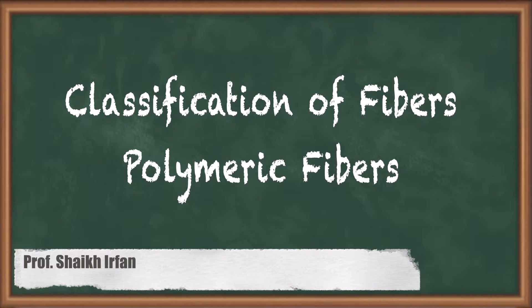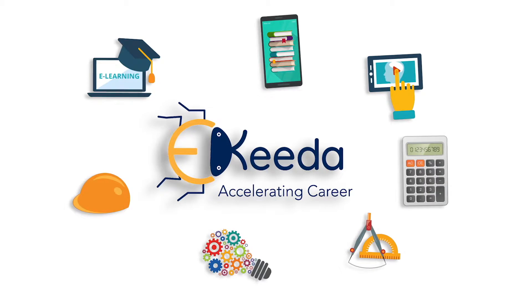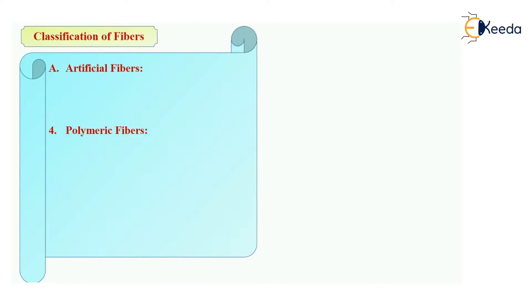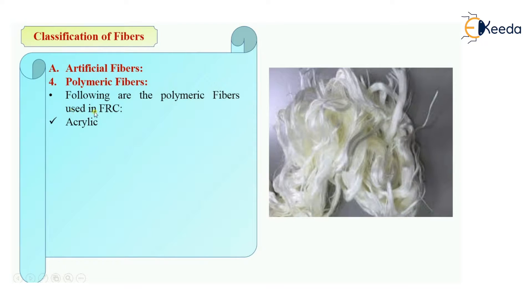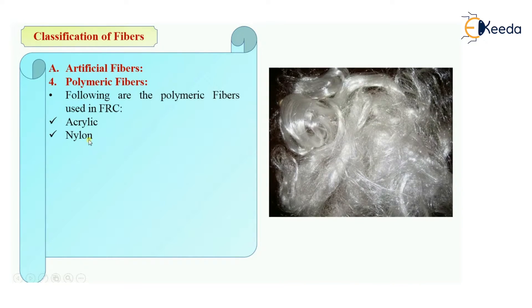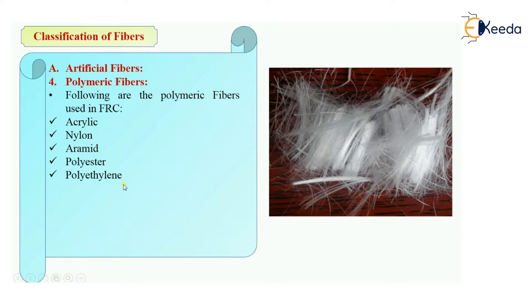Hello everyone, my name is Sheik Irfan and in this video we are going to see polymeric fibers. We are seeing the classification of fibers, various types of artificial fibers, various types of natural fibers. We have seen glass fibers, steel fiber, carbon fiber — now we will see the polymeric fibers. The following polymeric fibers are used in fiber reinforced concrete: acrylic fibers, nylon fibers, aramid, polyester fibers, polyethylene fibers, and polypropylene fiber.